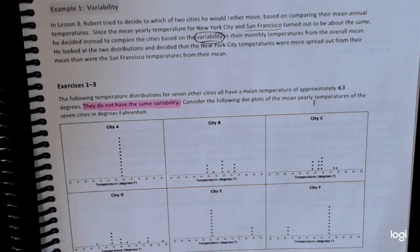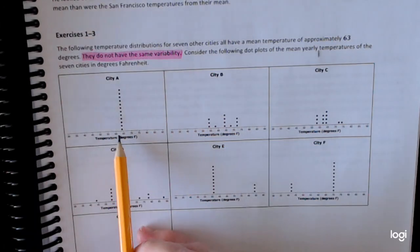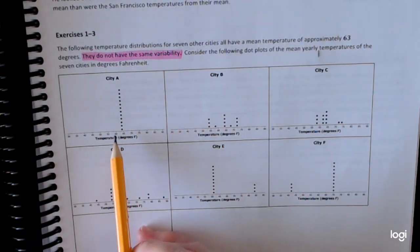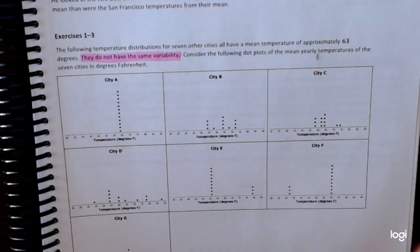What does a distribution that has no variability look like? Well, all the points are the same. Here's one that basically, there's no variability. There's no variety, as we would say.